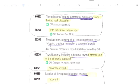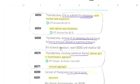And then 60260, this is also called a completion thyroidectomy in that they removed part of the tissue in one operative session and now they're coming back and removing the rest of the thyroid. So this is a thyroidectomy removal of all remaining thyroid tissue following previous removal of a portion.